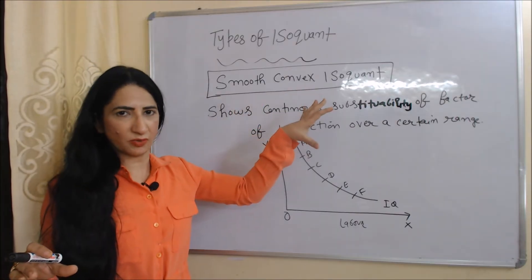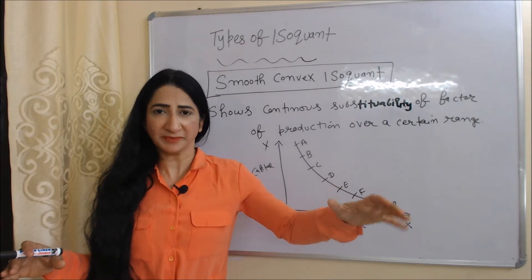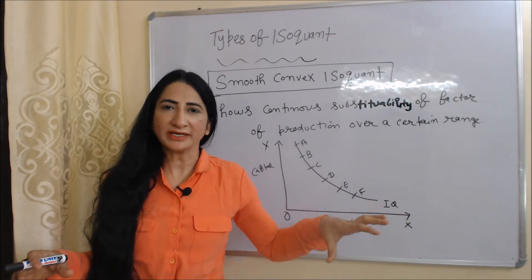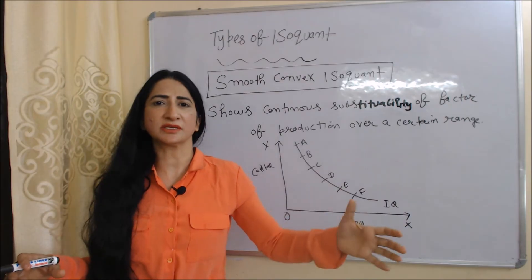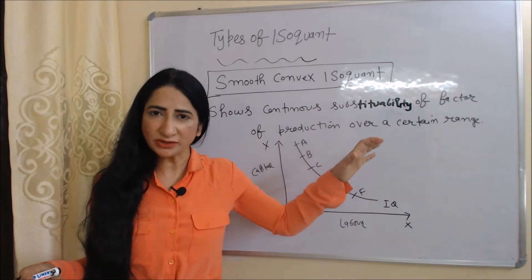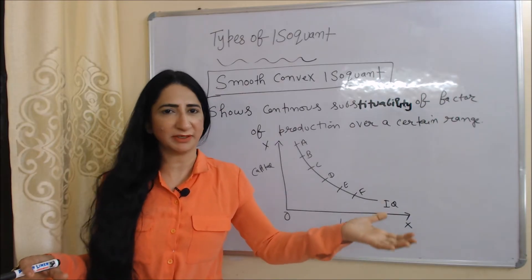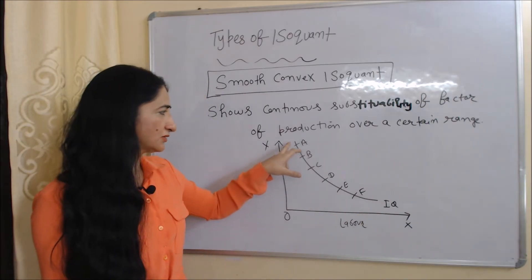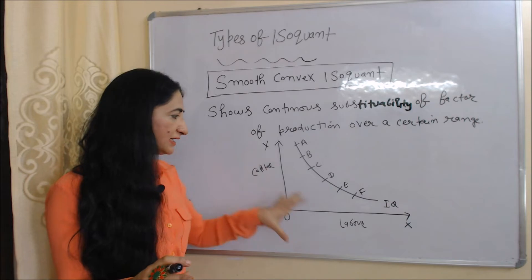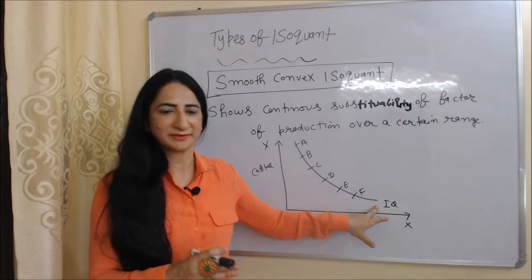The next type is the smooth convex isoquant. It shows continuous substitutability between factors of production over a certain range — we can continuously substitute labor for capital and capital for labor. In the diagram, points A, B, C, D, E, and F all show continuous substitutability. When we join all these points, we get the smooth convex isoquant.